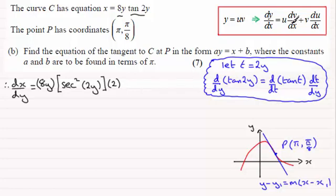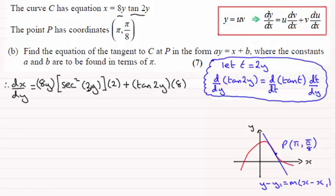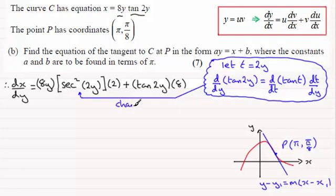So that's the first part of the product rule: 8y times 2sec²(2y). Now, plus the other part, which is tan(2y), multiplied by the differential of 8y with respect to y, which is 8. So we have dx/dy equals 8y · 2sec²(2y) plus 8·tan(2y). The chain rule was used within the product rule for the sec²(2y) part.